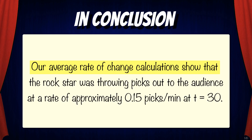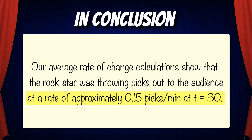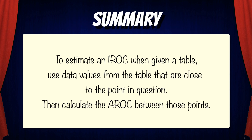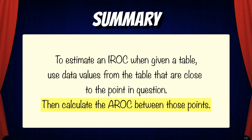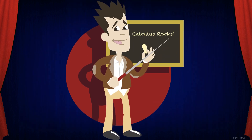In conclusion, we can say that our average rate of change calculations show that the Rockstar was throwing picks out to the audience at a rate of approximately 0.15 picks per minute at t equals 30. To summarize: to estimate an IROC when given a table, use data values from the table that are close to the point in question, then calculate the AROC between those points. And that's how you rock calculus.